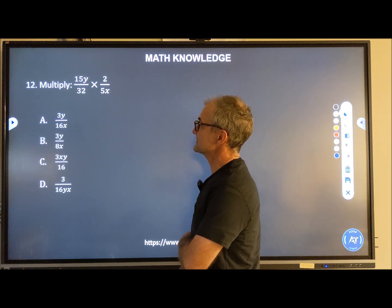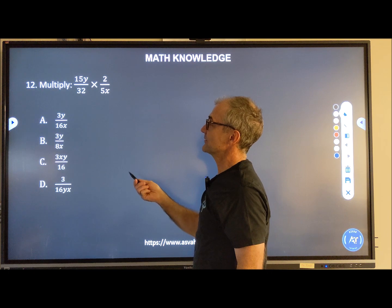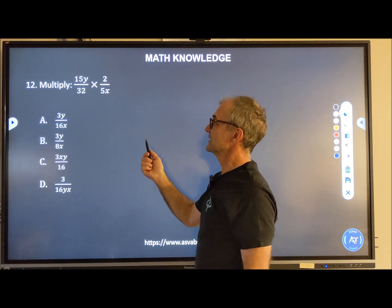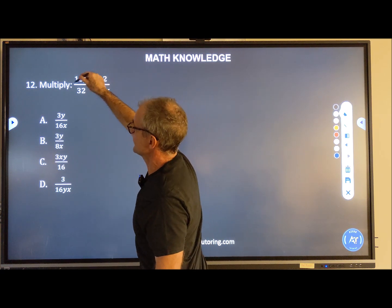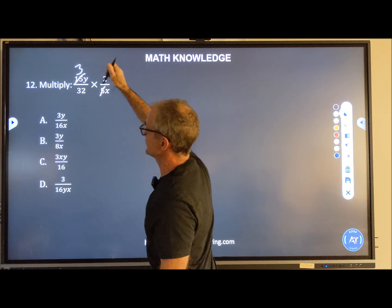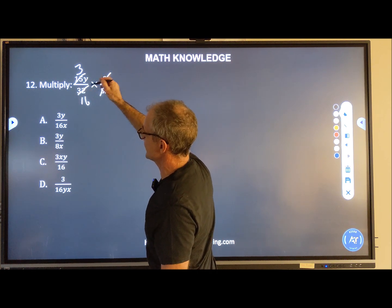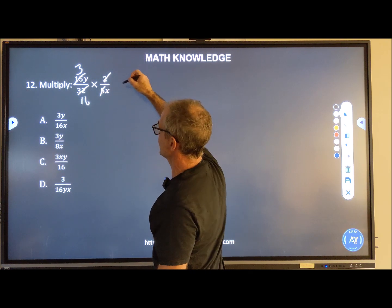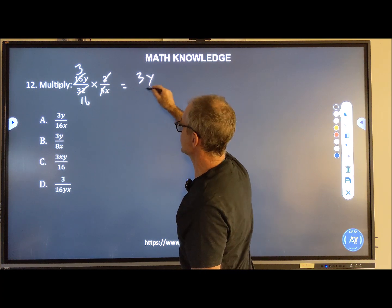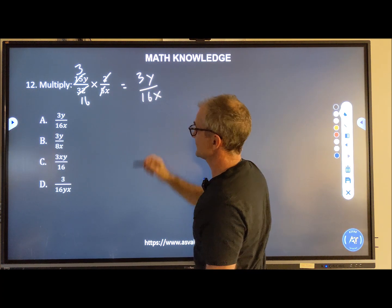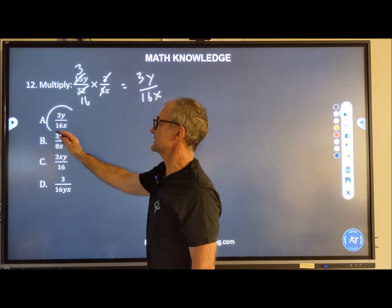Number 12, multiplying fractions. I'm going to multiply right across the top, multiply right across the bottom. However, before I do that, I look for a common term in each of them and see if I could cancel. Well, 5 will go into here one time, 5 goes into 15 three times. 2 goes into itself once, into 32 sixteen times. Now in the numerator I have 3Y, so there's my top number. In the denominator I have 16 and an X, that's my denominator. And I can see that's my answer right here, 3Y over 16X, answer A.